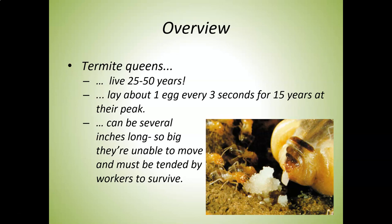The termite queen lays one egg every three seconds for 15 years, which is hard to imagine. They are genetically identical to the workers in those nests, so it's very interesting how they can be so different yet theoretically the same.